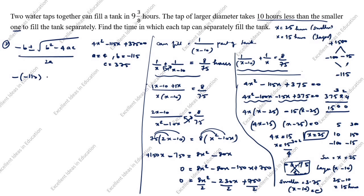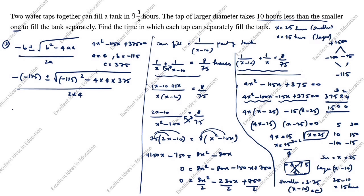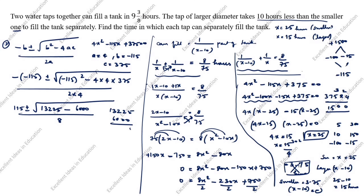Substituting: x = (minus of minus 115 ± √(115² minus 4 × 4 × 375)) / (2 × 4). We compute 115² = 13225. Then 4 × 4 × 375 = 16 × 375 = 6000. So the discriminant is 13225 minus 6000 = 7225. Therefore x = (115 ± √7225) / 8.